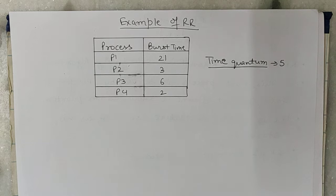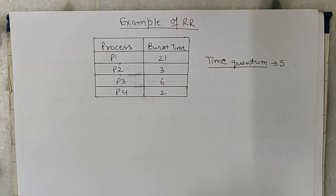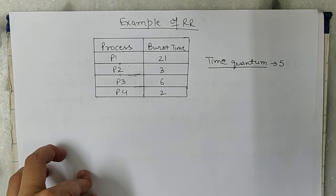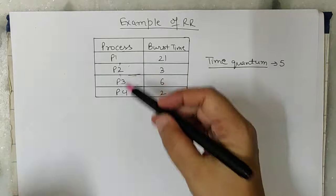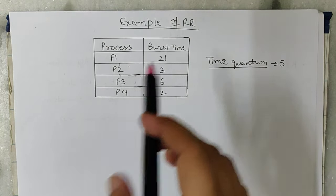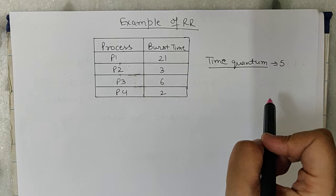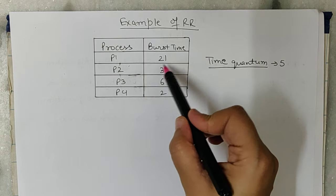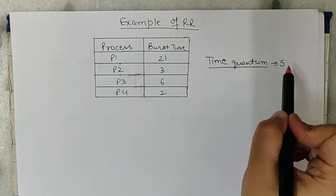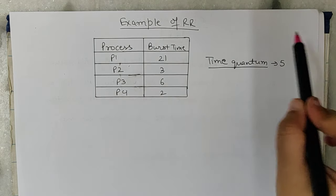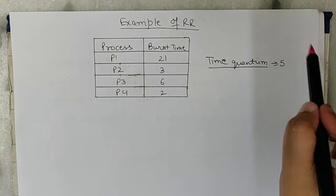So this is the example — there are 4 processes and each has various burst times, and the time quantum is given as 5 minutes. So every process in Round Robin will get the CPU for 5 minutes. If its burst time is 21, it will still get the CPU for only 5 minutes — it can be 5 minutes, 5 seconds, or 5 nanoseconds, the unit doesn't matter.